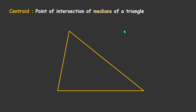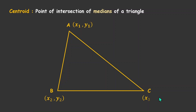So if you have a triangle like this, say ABC, such that the coordinates of A, B, C are given and these are x1, y1, x2, y2, and x3, y3.